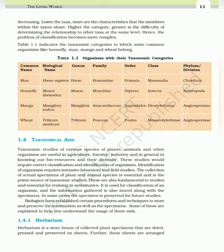Table 1.1 indicates the taxonomic categories to which some common organisms belong. Man: Homo sapiens, genus Homo, family Hominidae, order Primata, class Mammalia, phylum Chordata. Housefly: Musca domestica, genus Musca, family Muscidae, order Diptera, class Insecta, phylum Arthropoda. Mango: Mangifera indica, genus Mangifera, family Anacardiaceae, order Sapindales, class Dicotyledonae, division Angiospermae. Wheat: Triticum aestivum, genus Triticum, family Poaceae, class Monocotyledonae, division Angiospermae.